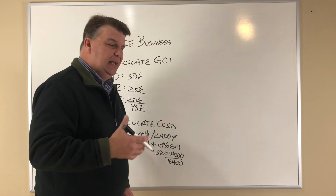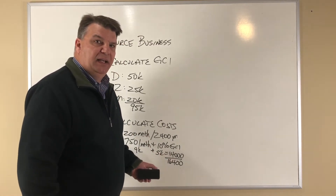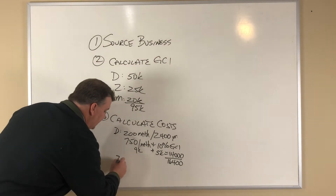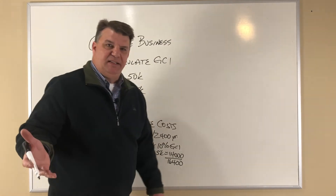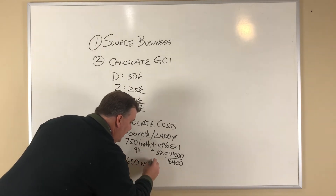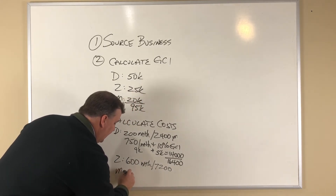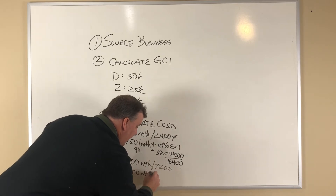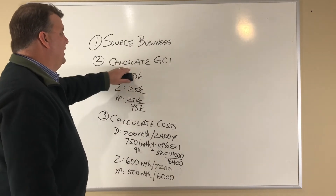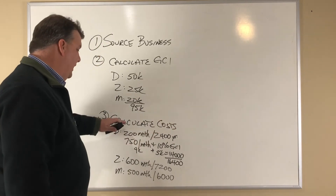That database cost assumes about two hours of phone calls per day from an ISA company on your behalf. For Zillow, let's say you're spending $600 a month — that comes out to $7,200 annually. And on your mailers, $500 a month equals $6,000 annually. So you've sourced your business, calculated the GCI from all sources, and calculated the costs on how you brought that money in.